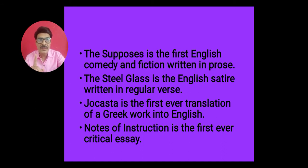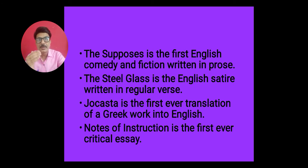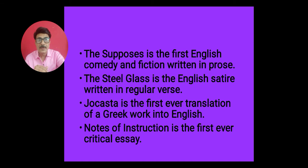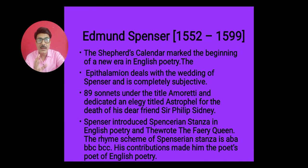The Steel Glass is another work written by Gascoigne — it is the first English satire written in regular verse. Gascoigne also wrote Jocasta, which is the first translation of a Greek work into English language. His last work, Notes of Instruction, is the first critical essay. Because of all these contributions, Gascoigne is considered an important author of the pre-Elizabethan period.